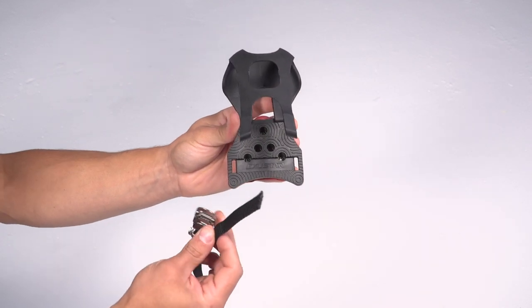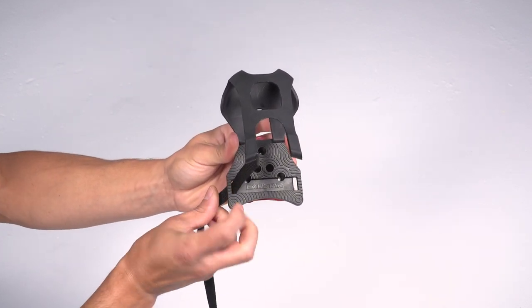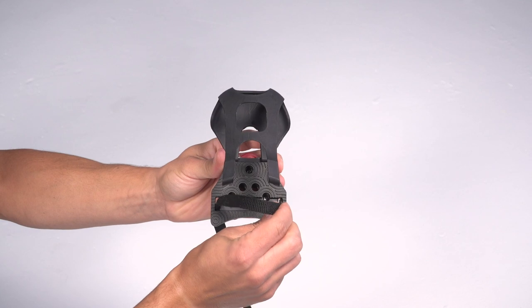Thread a strap through the bottom of the toe clip. It doesn't matter which one, but make sure the buckle faces down.